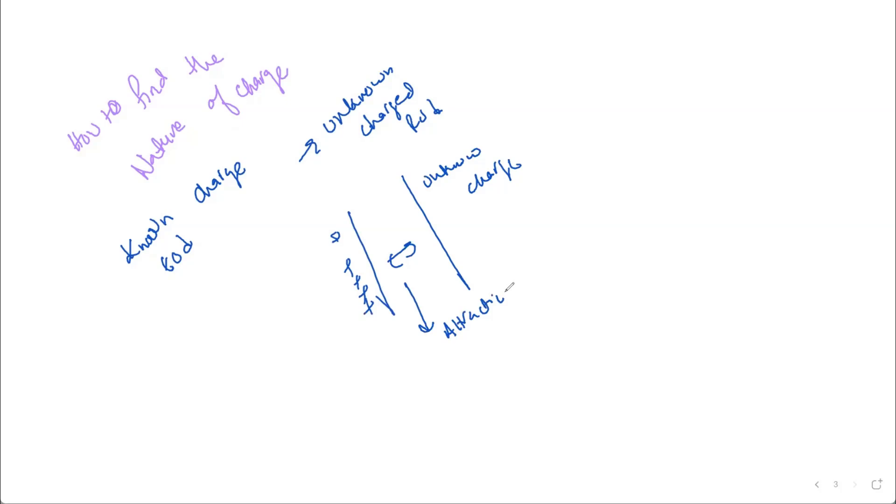If there is attraction between them, it means this rod has negative charge. And if there is repulsion between them, it means it has a positive charge. So this is how we identify the nature of charge through the object.